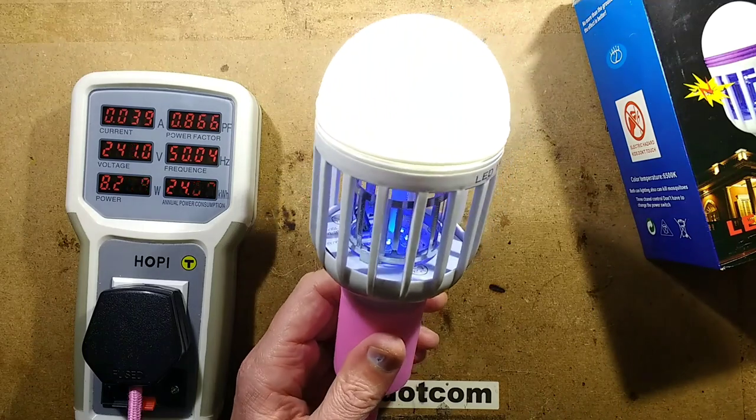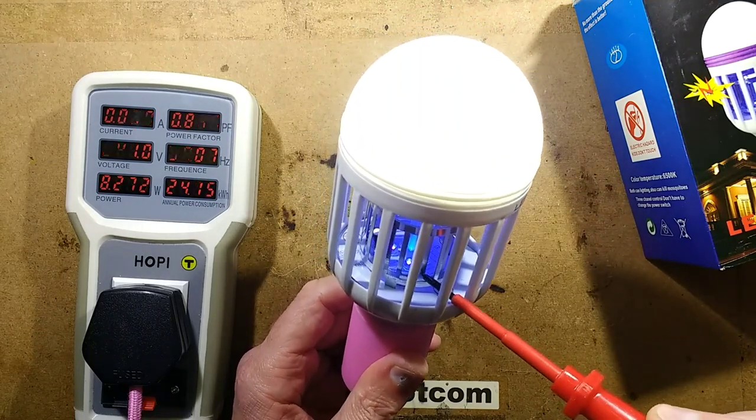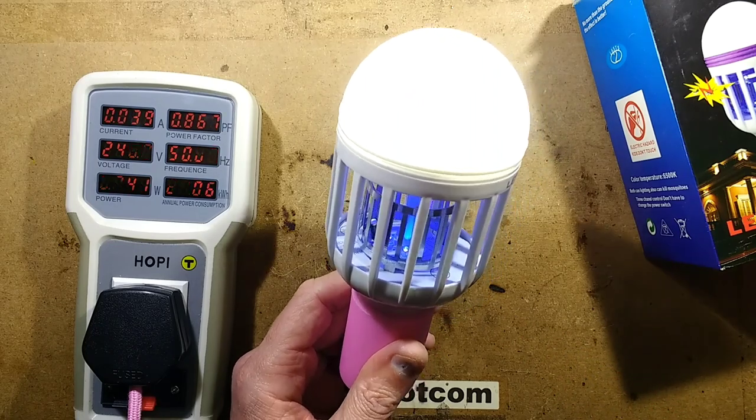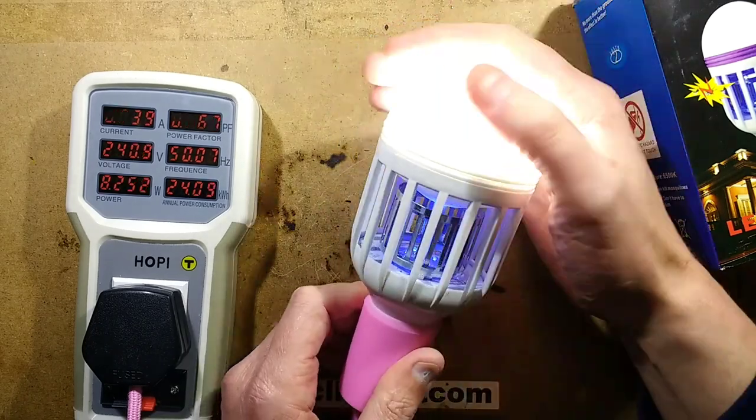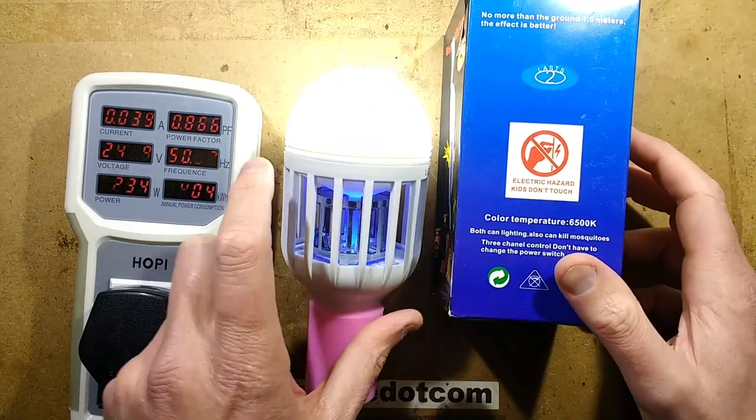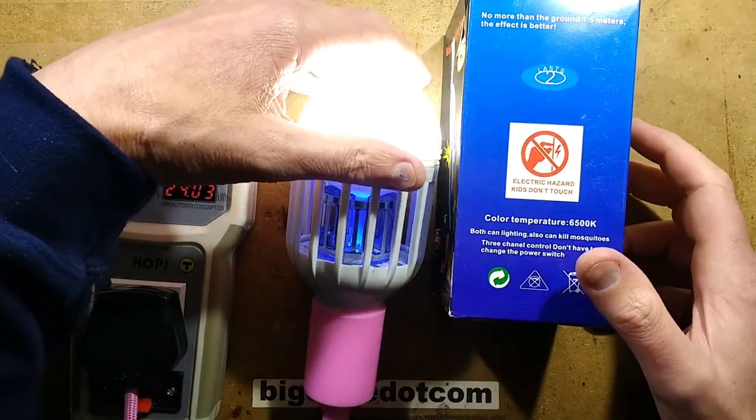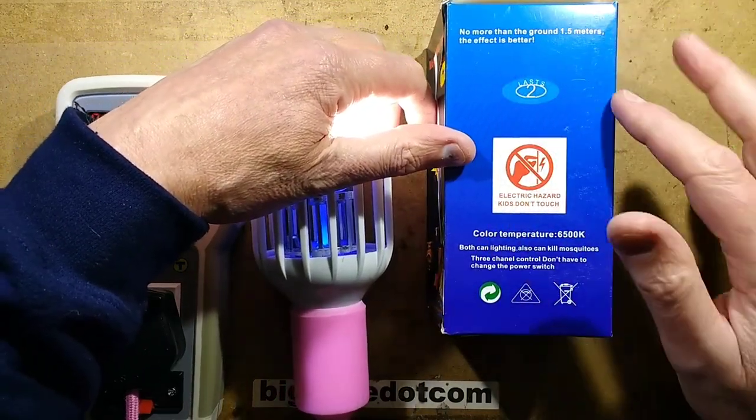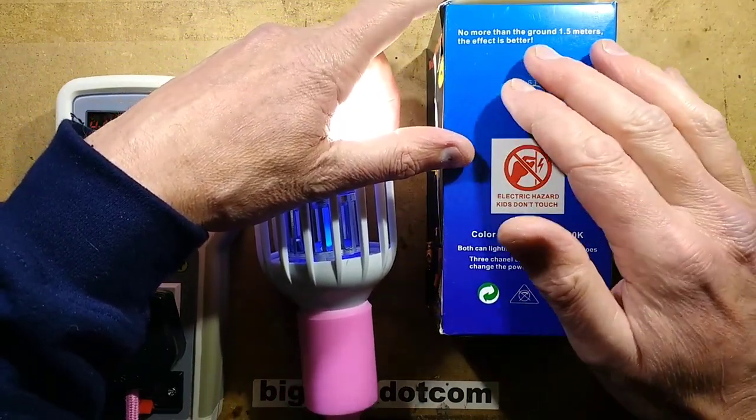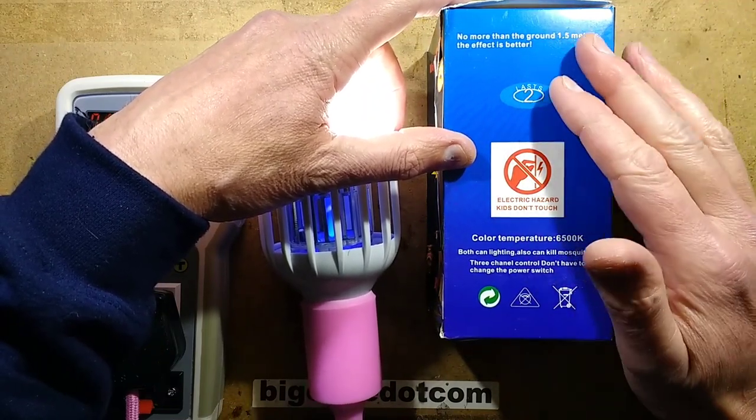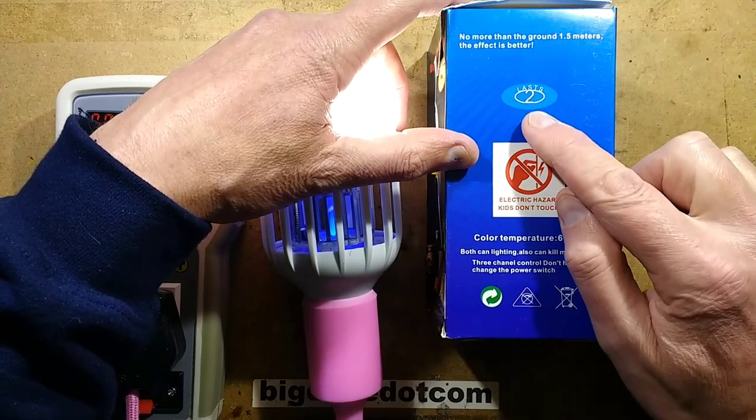Did the hoppy meter change there? It changed a little bit. I think it was just the burst as it was charging up. When you first power it up, it comes up at 8 watts. When I was looking at the package for this, the chinglish package says, no more than the ground 1.5 meters, the effect is better. That's absolutely fine.